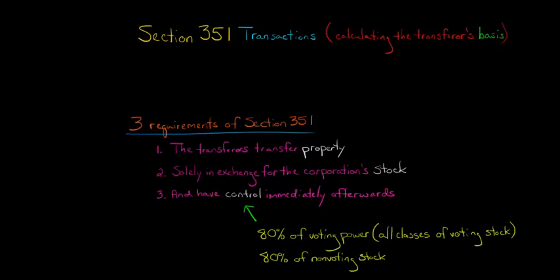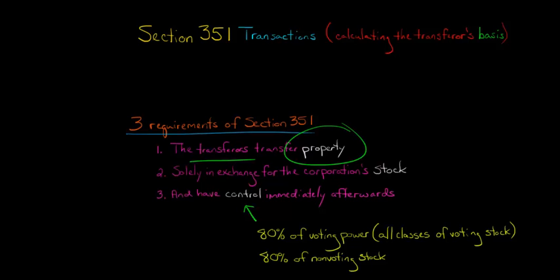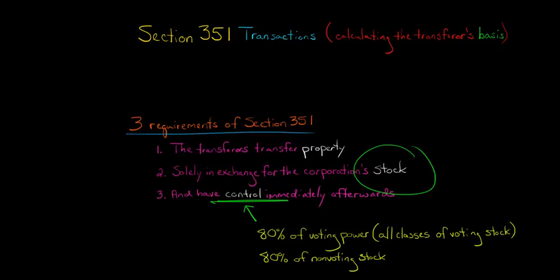In this video, we're going to discuss how to calculate the transferor's basis when you have a Section 351 transaction. Quick review: the three requirements of Section 351 are that the transferors are transferring property in exchange for a corporation's stock, and then they have control of the corporation immediately afterwards.